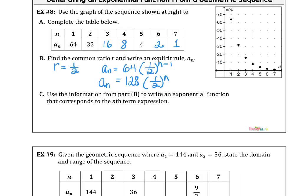Part C, just like we did in our last lesson, we can write an exponential function that corresponds to the nth term expression using function notation. f of n is 64 times 1 half to the n minus 1 power. Or you could also write f of n is 128 times 1 half to the n power. Either one would be acceptable.